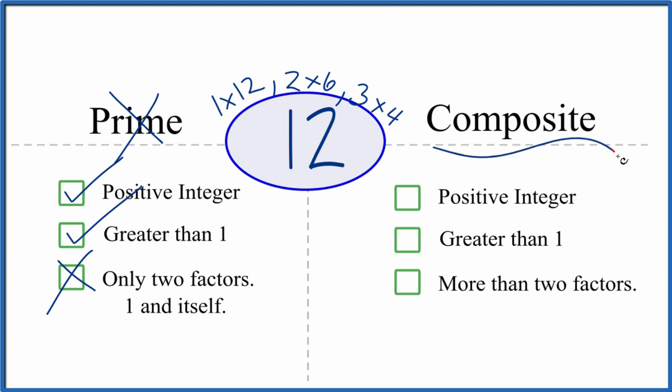But is 12 composite? It's a positive integer. It's greater than 1. And there are more than two factors. So 12, that's a composite number. This is Dr. B looking at whether the number 12 is prime or composite. It's composite.